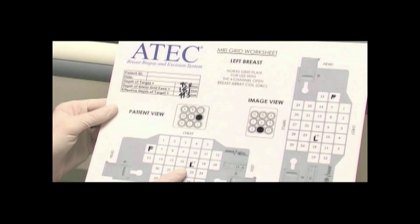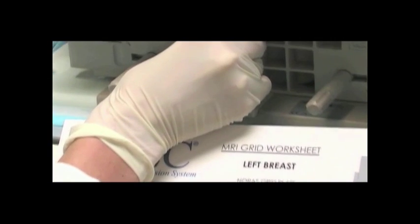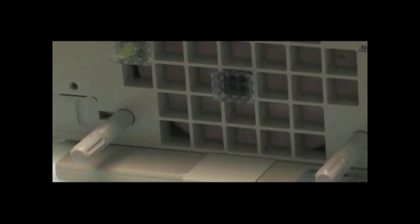Looking at the compressed breast in the grid, match the location marked on the grid worksheet to the actual compression grid square. Insert the nine-hole needle guide in the appropriate grid space based on the targeted calculation.